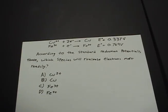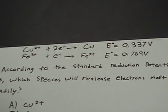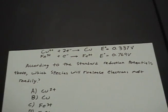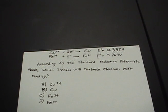Now let's do an example from the AP review. According to the standard reduction potentials given, which species would release electrons most readily? Here we have copper and iron, with their standard half-cell potentials provided. Since the species is releasing electrons, that means it's being oxidized.